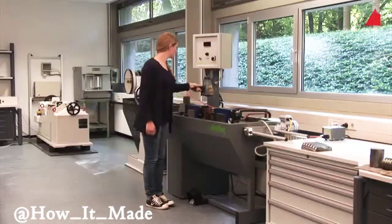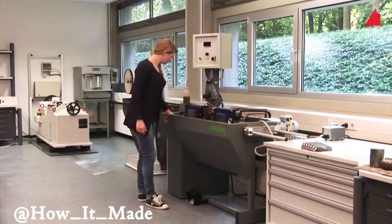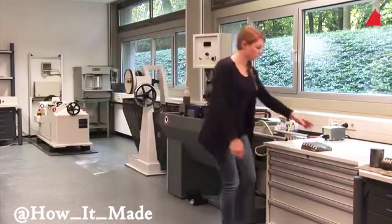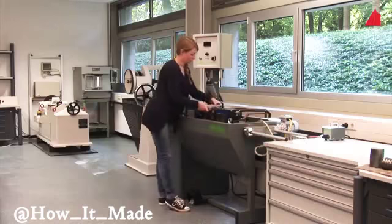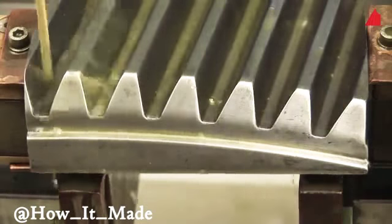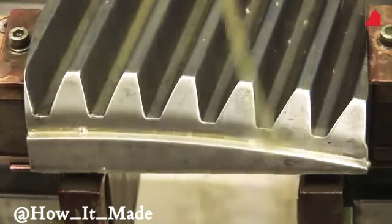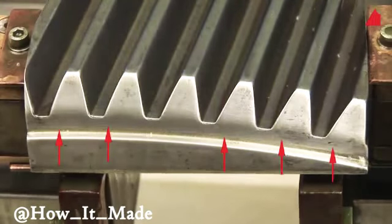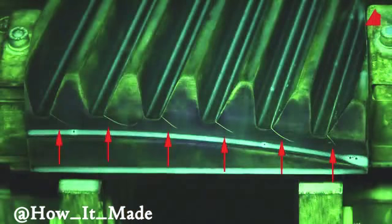Another test piece has to face the magnetic particle inspection: a section of a large gear wheel. The same procedure again—placing the gear wheel between the magnetic pole pieces, magnetizing, and applying magnetic particle suspension. Already in daylight there are indications of cracks, and again they are best visible under ultraviolet light while darkening the daylight.